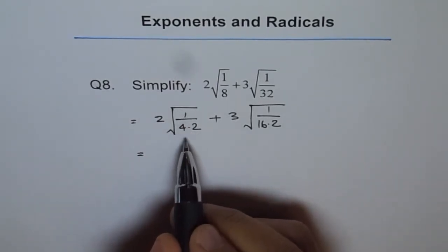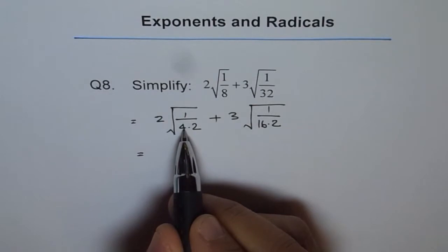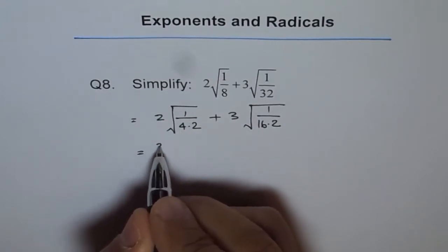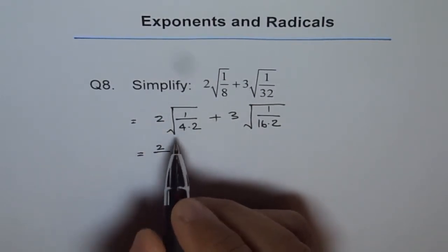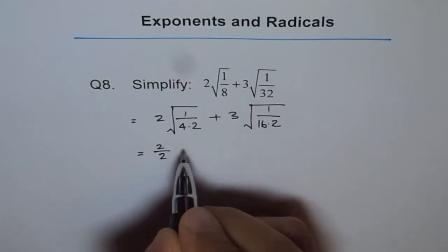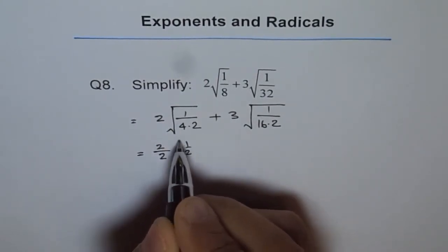So from here if you see 2 squared is 4 so I can bring out 2. So I get 2 which is already there and 2 from this place in the denominator, correct? And I'm left with 1 over 2 inside.